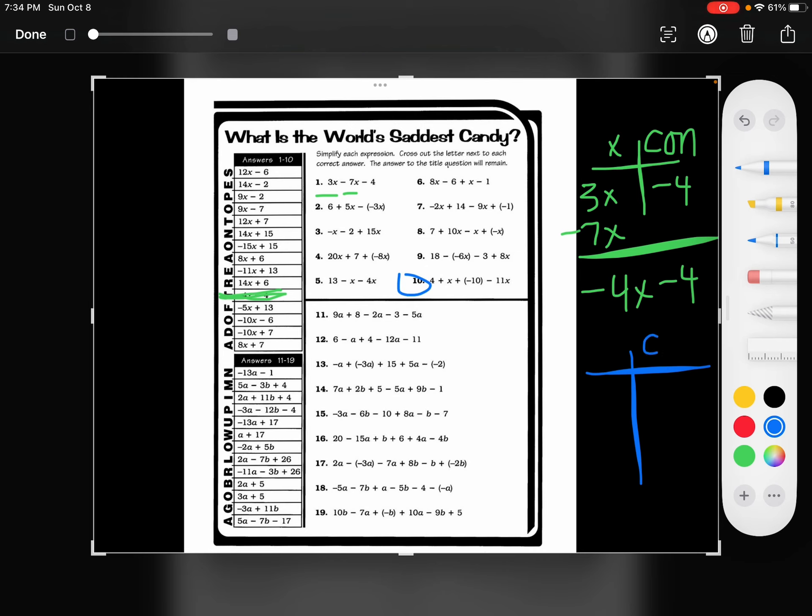Okay, let's do a harder one. I'm going to try number 10. I have my constants and my x's again. So I've got 4 plus x minus 10 minus 11x. So 1 minus 11 is going to give me negative 10x, and then 4 minus 10 is going to be negative 6. So negative 10x minus 6.